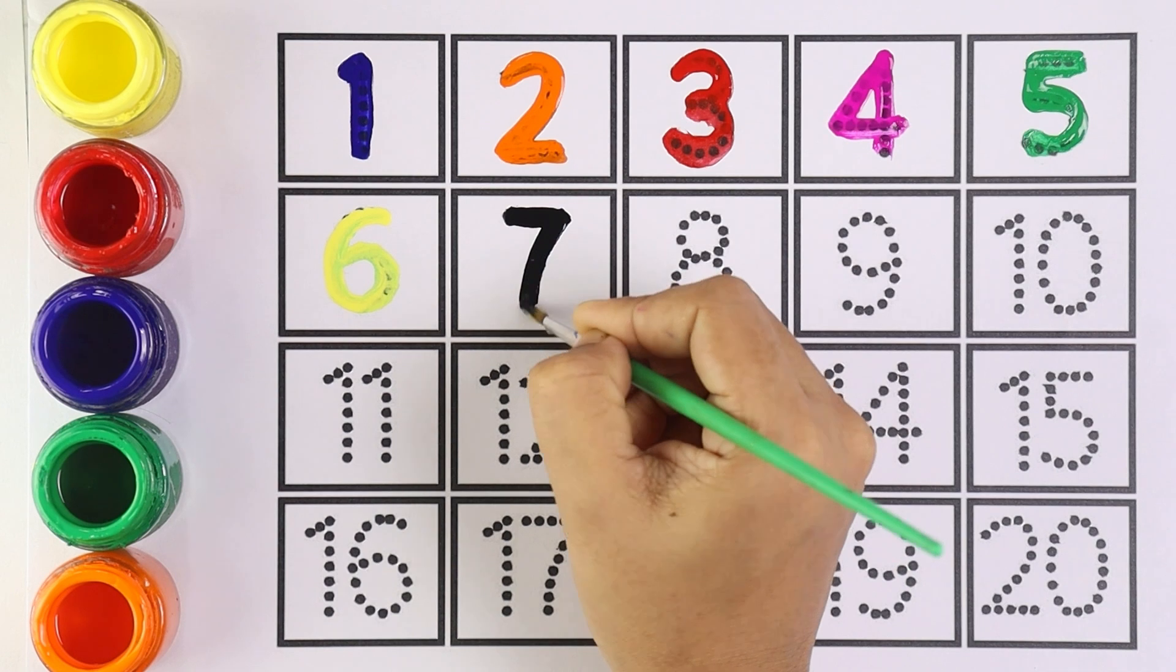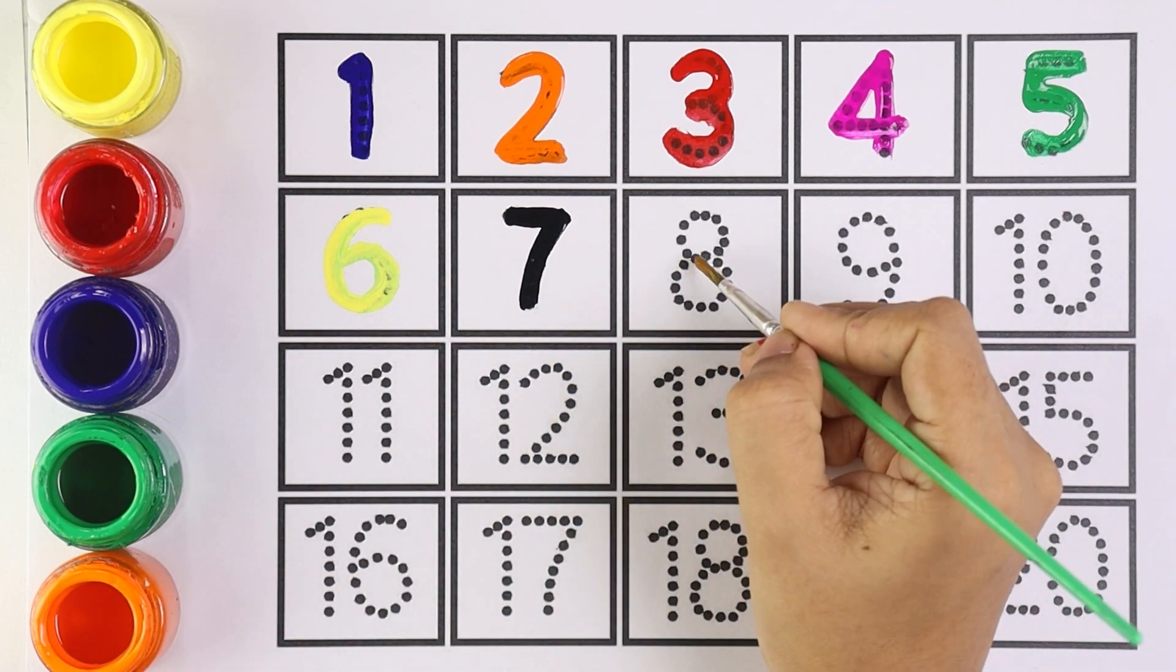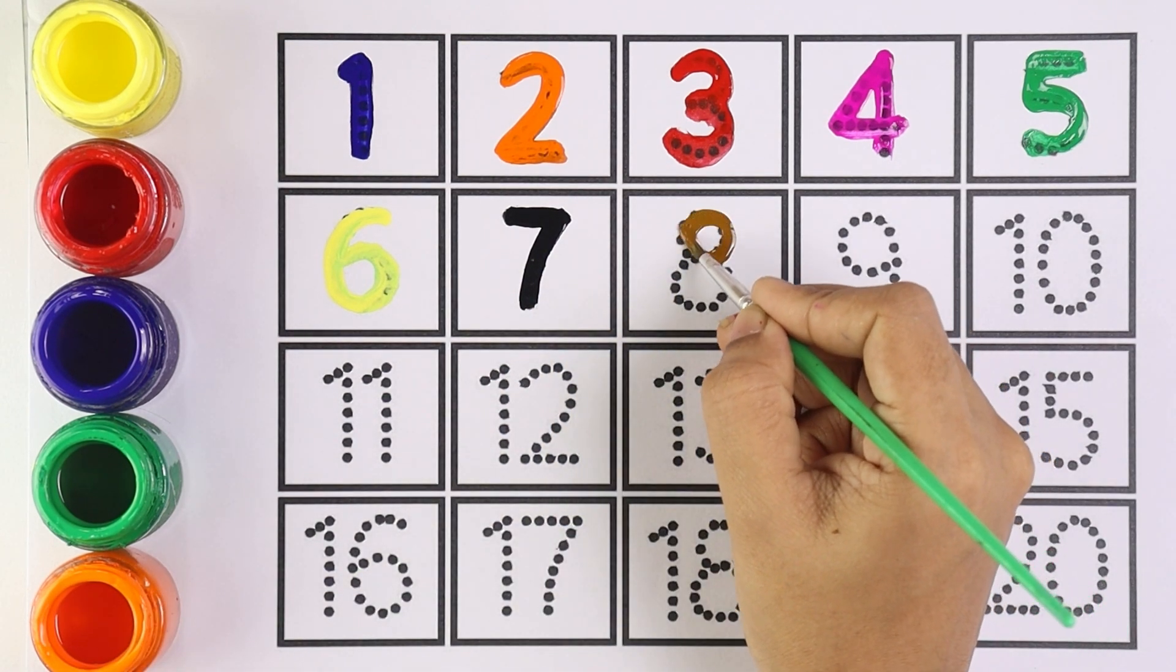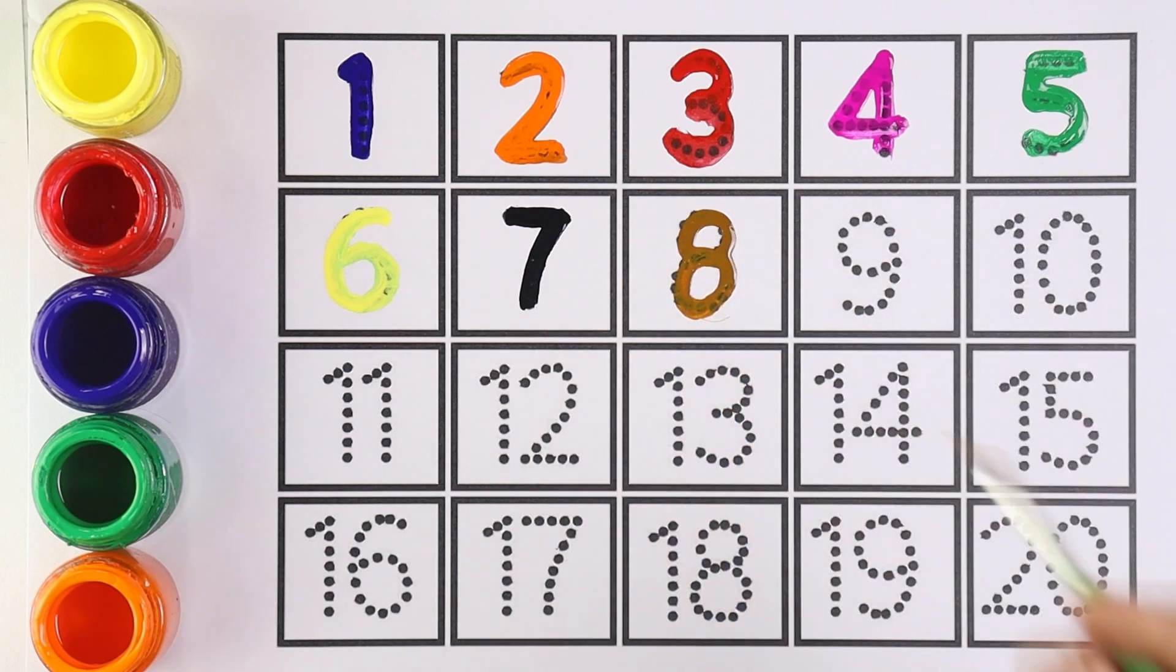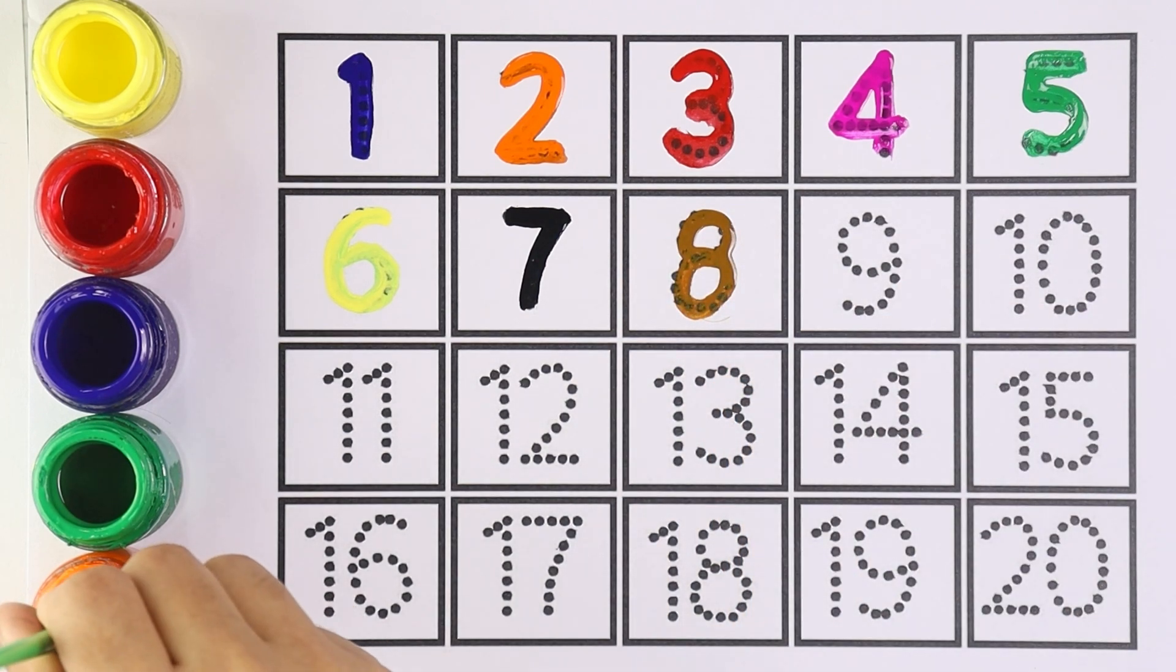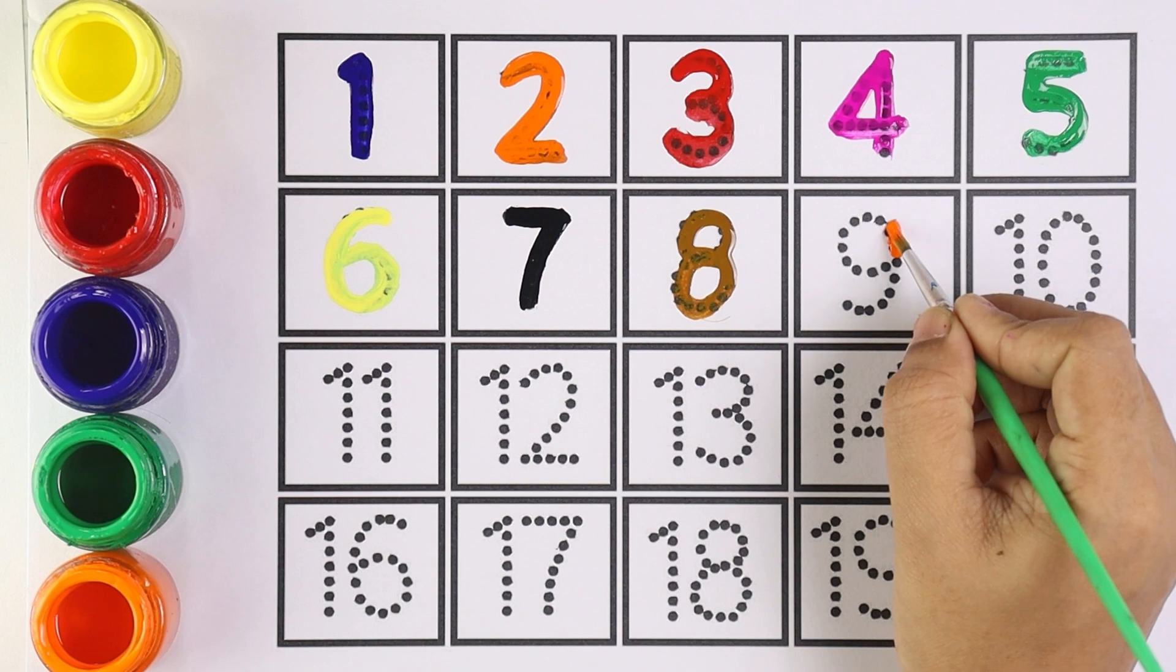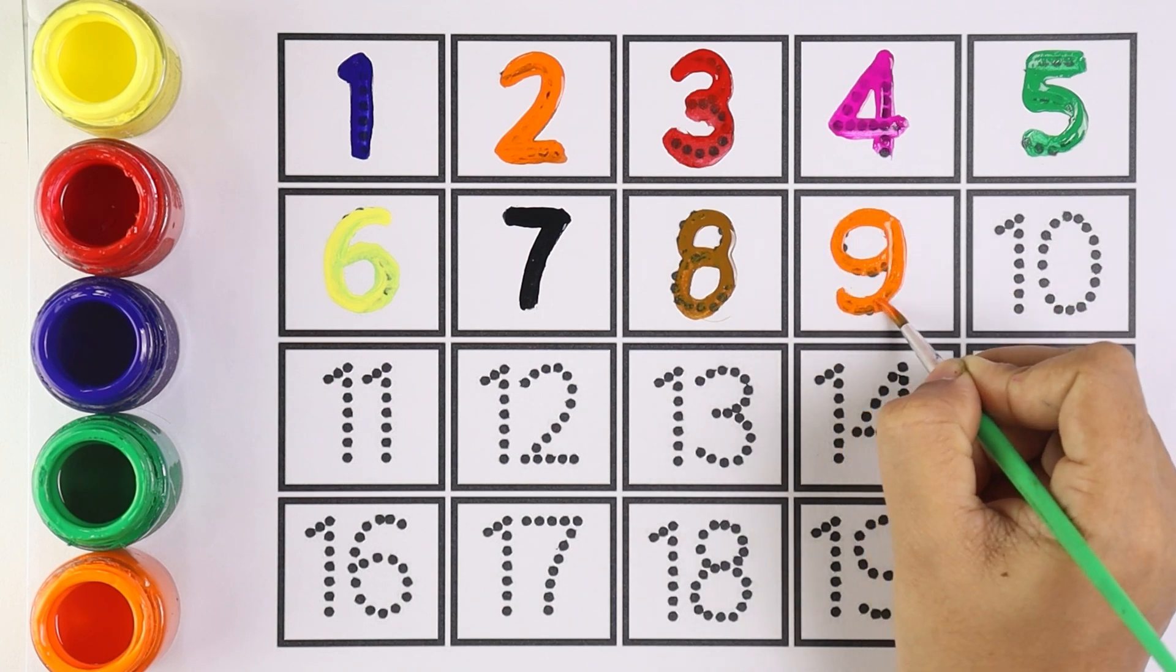Black color, I'm writing number seven. Number seven. Brown color, number eight, number eight. Orange color, I'm writing number nine. Which number is this? It's number nine.